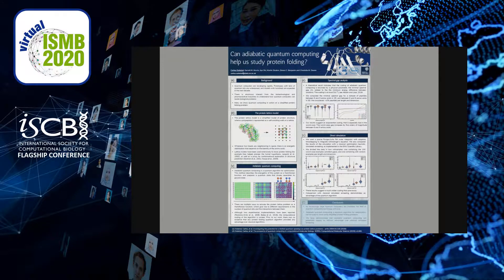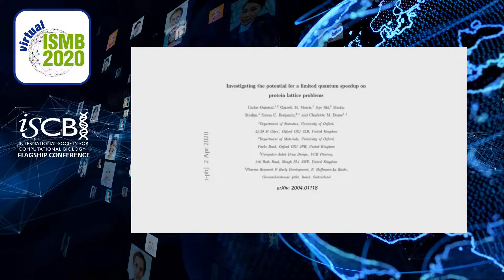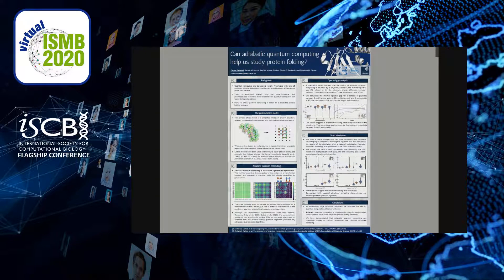The conclusions of this study are threefold. First, as increasingly large quantum computers become available, the field of quantum computational biology is starting to rise. Second, one of the problems in computational biology that might be solved using quantum computers is protein folding. Third, and most importantly, there is an actual advantage to using quantum computers. We have recently released a preprint with all the details of these calculations and the statistical analysis. We have also published a review article in WIREs Computational Molecular Science describing everything we expect quantum computing to achieve in computational biology over the next decades. Thank you very much for your attention, and I will be happy to discuss further during the Q&A.